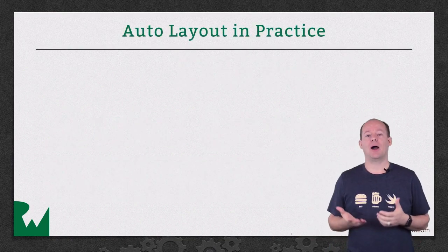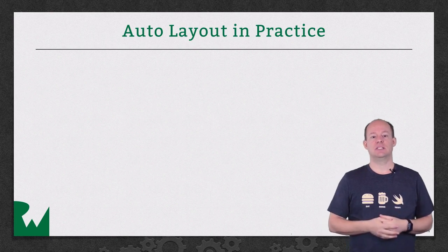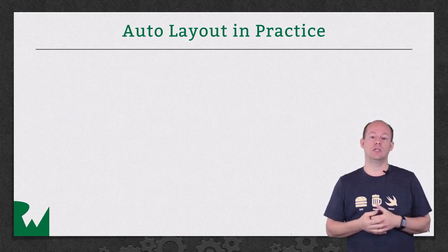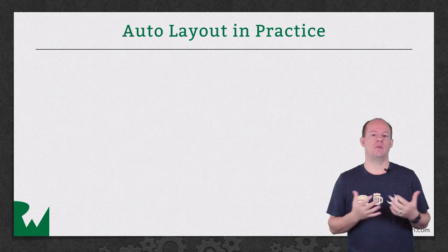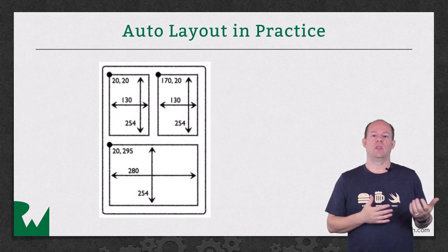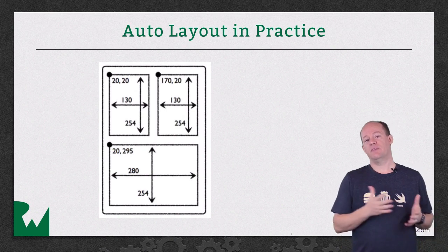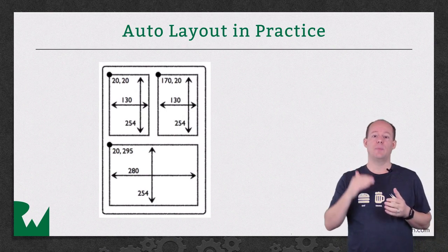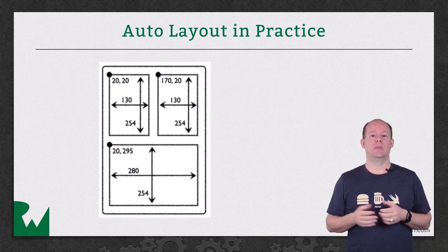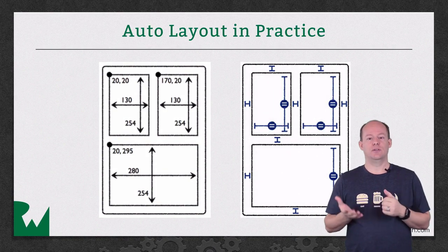To begin, let's talk about what Auto Layout is. Auto Layout is a system that lets you define the user interface for an app using a description of the position of the elements. Before Auto Layout, you would define the user interface for an app by setting the specific x and y position, and then a width and a height for each element. Now, with Auto Layout, you describe the user interface.